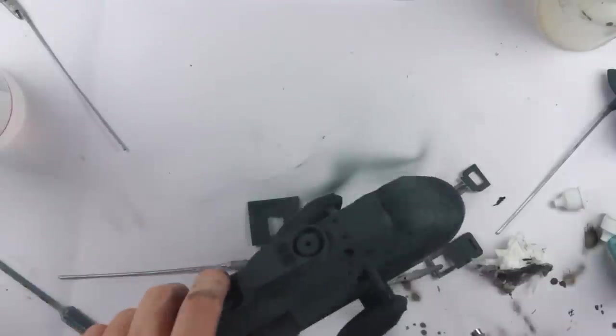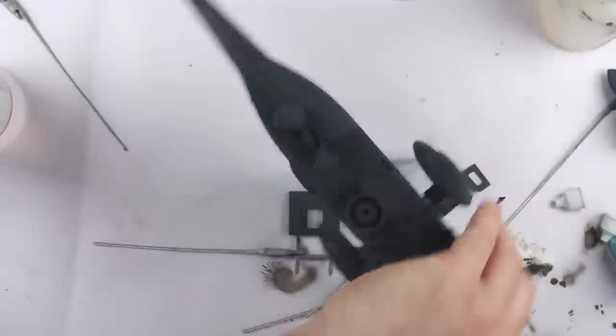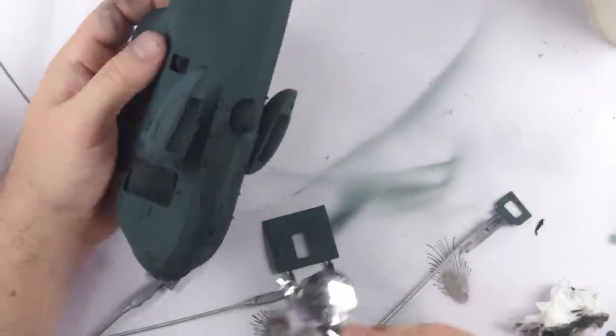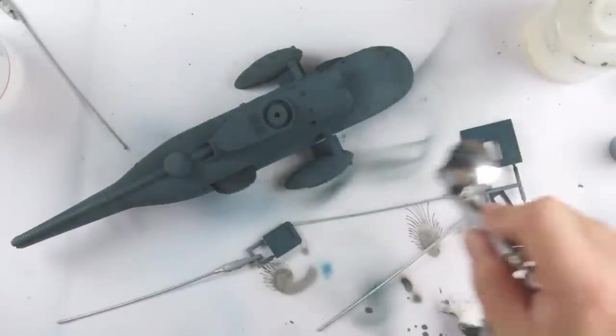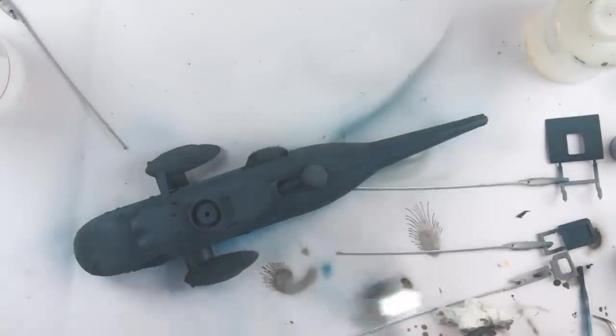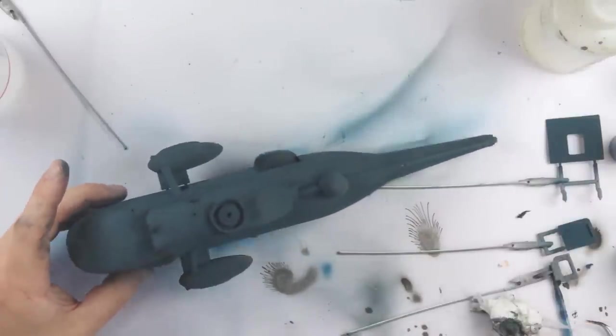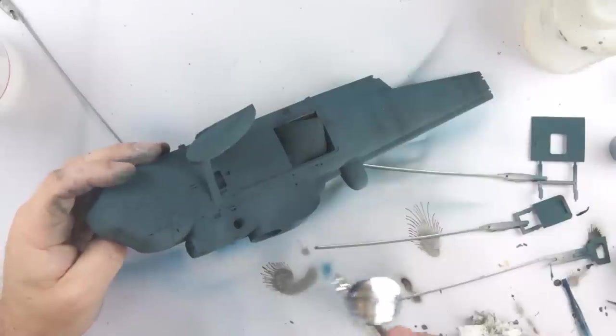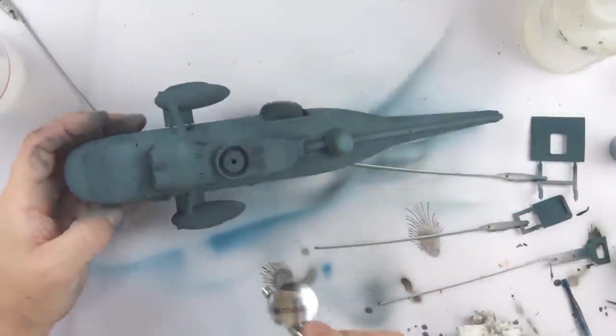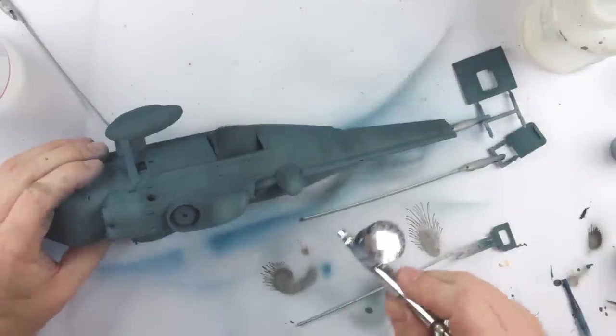I then mixed in some medium blue to lighten this a little and went back over the airframe. I added a little X4 blue to intensify the blue colouration a little and sprayed from below to cover the lower surfaces. Adding some more medium blue to lighten it a little, I came back in from above to give that same increase in saturation but with a more faded look to simulate the airframe being faded in the sun. More medium blue was added to lighten and desaturate the upper surfaces a bit more.